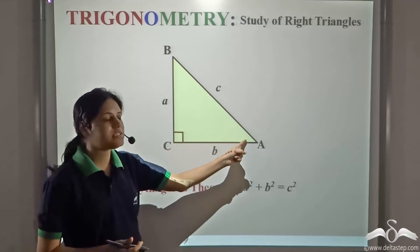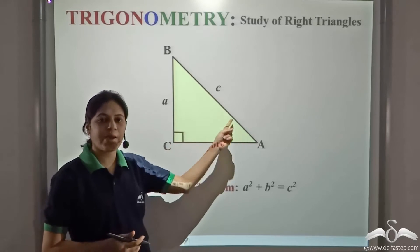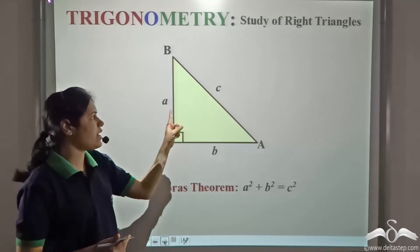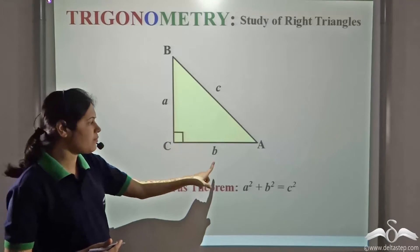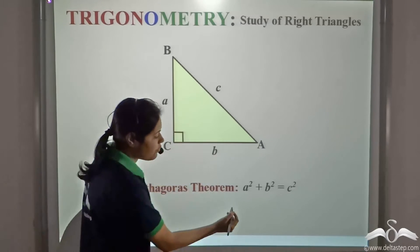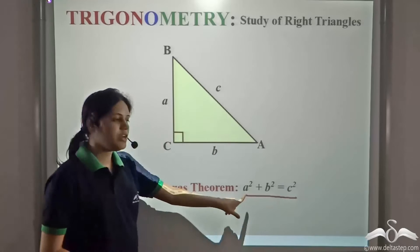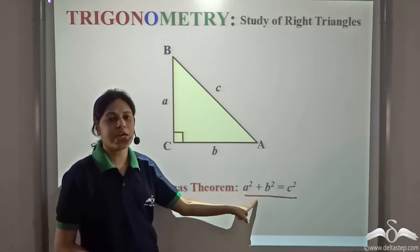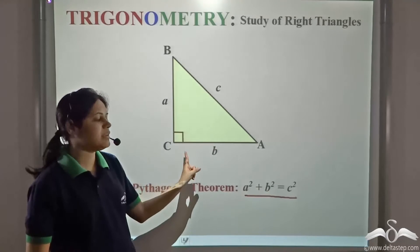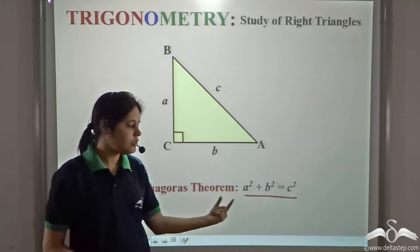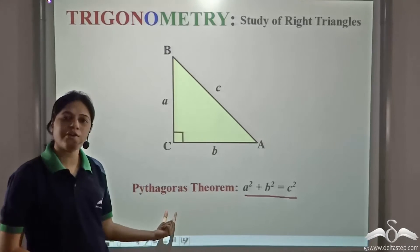C is the length of the hypotenuse, so C squared is equal to A squared plus B squared. From here, if we know the lengths of any two sides of a right angle triangle, we can calculate the length of the third side using the Pythagoras theorem.